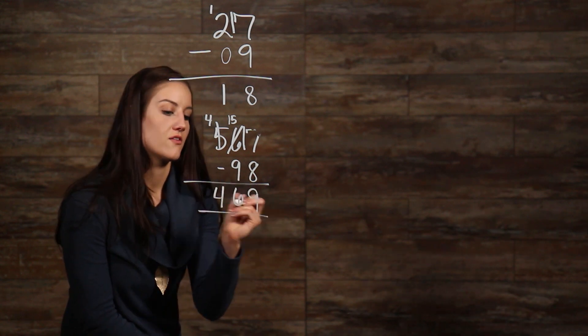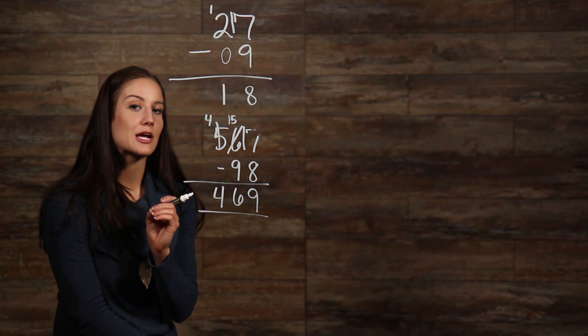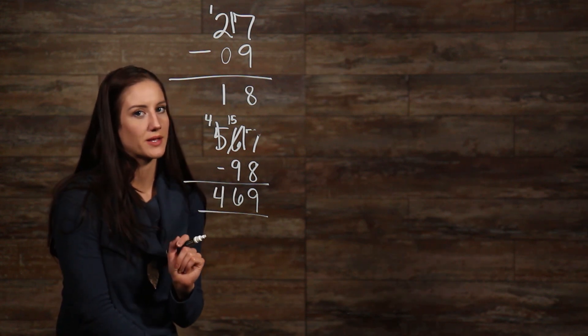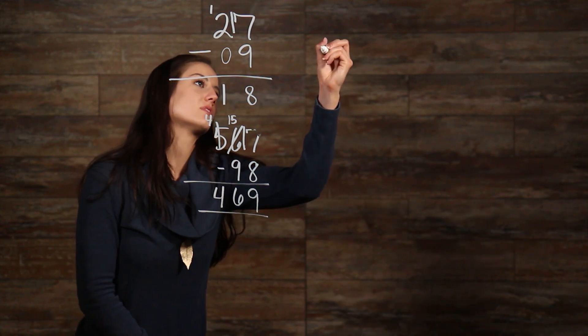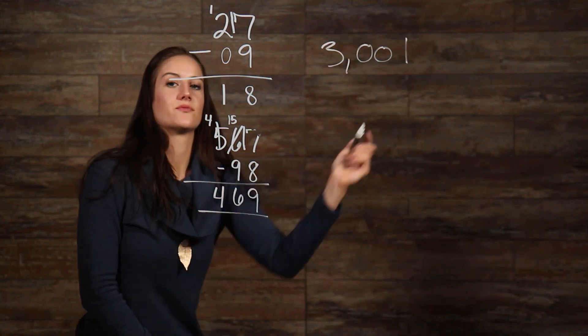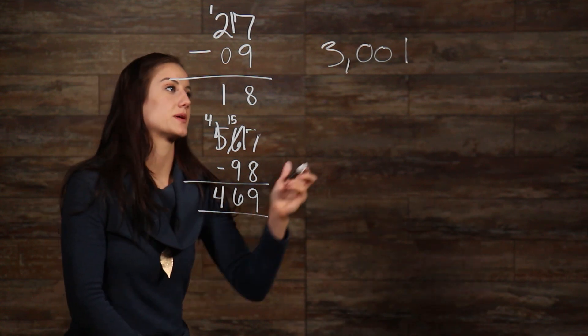Now, for our last example, let's take a look at how to borrow across zeros. I'll show you what I mean. Let's take 3,001 and take away 999 from it.